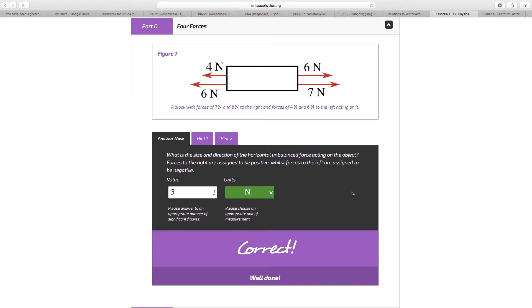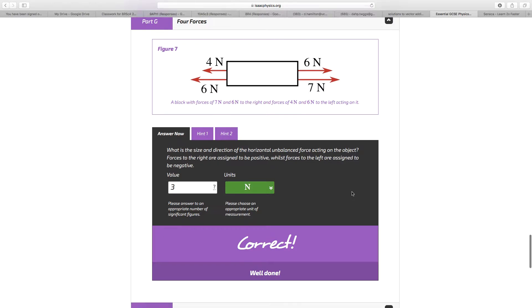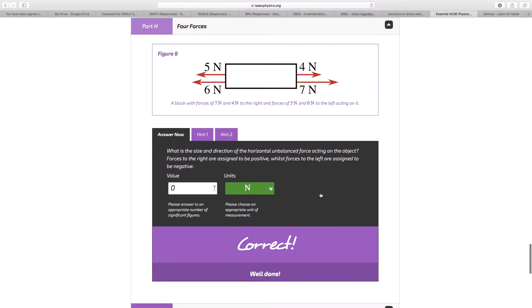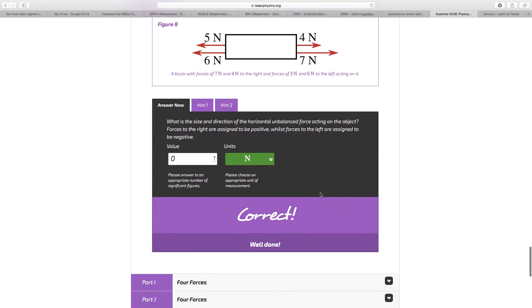4 and 6 to the left, 6 and 7 to the right, that's 10 and 13. So that gives you a net or resultant of 3 to the right, plus 3 Newtons. 4 forces again, 5 and 6 is 11, 7 and 4 is 11, 0 Newtons.